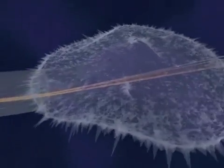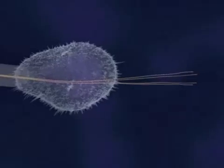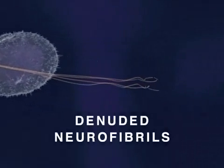Ultimately, both the developing neurite and its growth cone collapse, and some denuded neurofibrils form aggregates, or tangles, as depicted here.